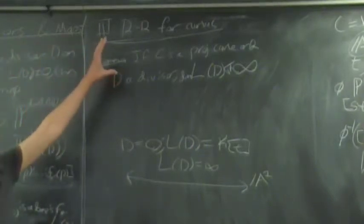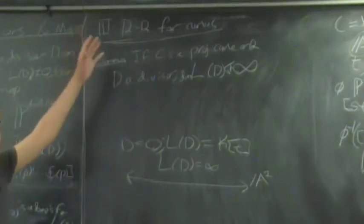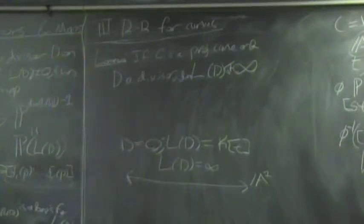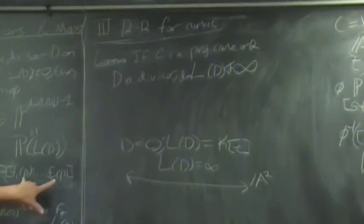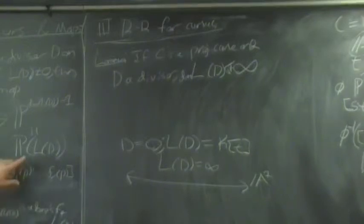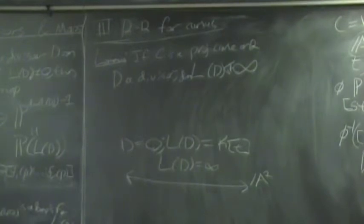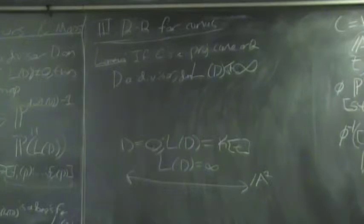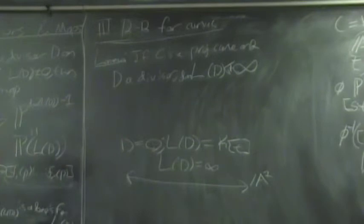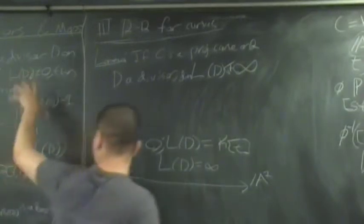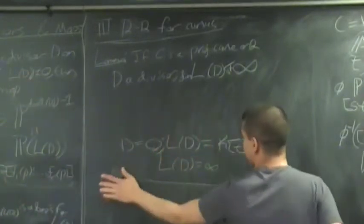So if I had been careful earlier, I should have said: choose a finite-dimensional subspace, find a basis, put it all together, and then you get the map. Because if C is not projective, this might not make sense since that could be an infinite-dimensional space. In all of our applications, we only really care about projective curves, so this construction will always work exactly as I wrote it down.